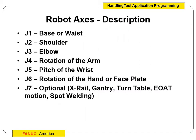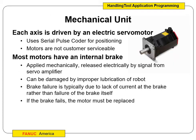J7 is more optional — things like an X-rail, gantry, turntable, end-of-arm tooling (EOAT) motion, or spot welding that we can add on. End-of-arm tooling is really just our gripper opening and closing, our vacuum suction cup, and those different things.